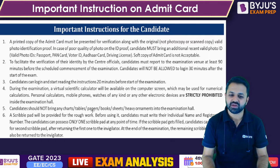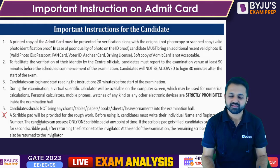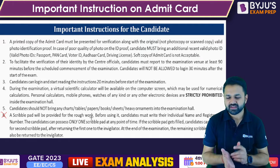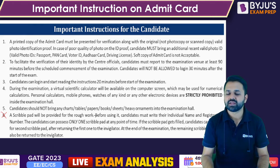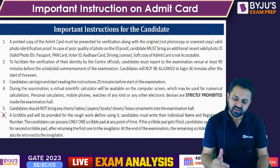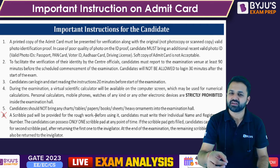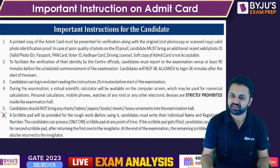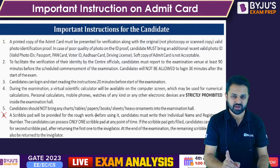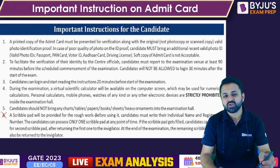Candidates should not bring any charts, tables, papers, books, etc., and no heavy ornaments. An important point is about the scribble pad: a scribble pad will be provided for rough work. You will be able to request another scribble pad after finishing the first one, but you must submit the first one. When you receive the scribble pad, you must write your name and registration number on it. After using it, return it to the invigilator and then you can take another one — so you will have only one scribble pad at a time.